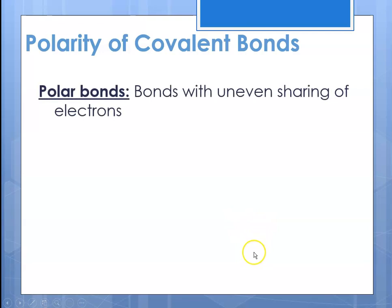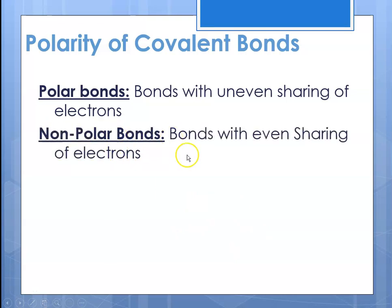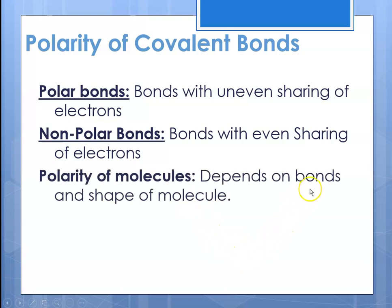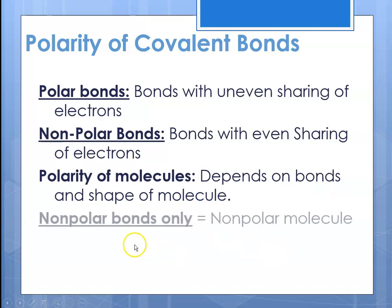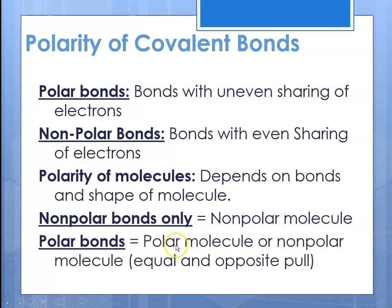The last thing we talk about is the polarity of covalent bonds. Polar bonds are bonds with uneven sharing of electrons; nonpolar bonds have even sharing. The polarity of the molecule depends on two things: the bond type and the shape of the molecule. If there are all nonpolar bonds, you'll have a nonpolar molecule. If you have polar bonds, it depends on whether the geometry leads to a polar or nonpolar molecule — for example, water has polar bonds and is a polar molecule, but some molecules have polar bonds yet are nonpolar due to their geometry.